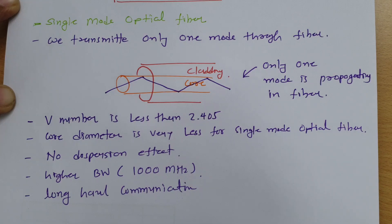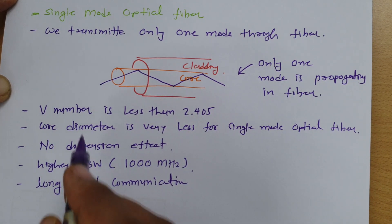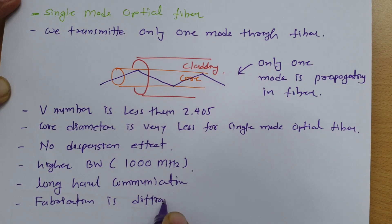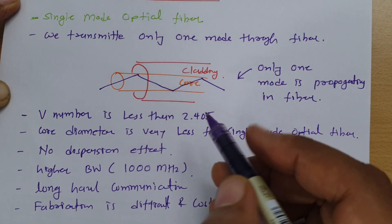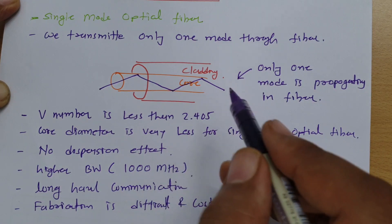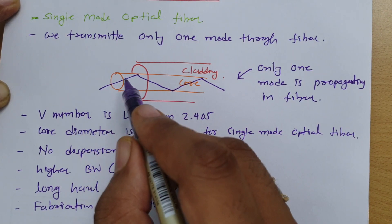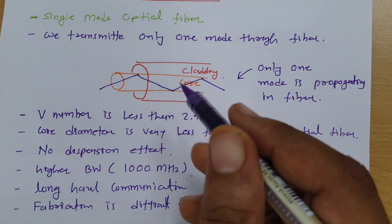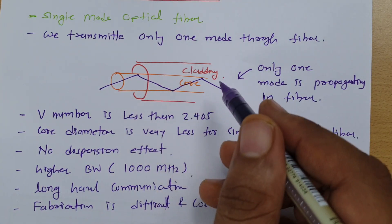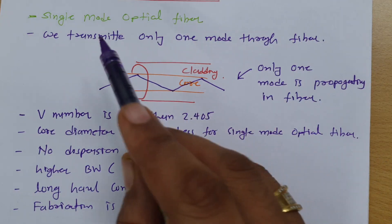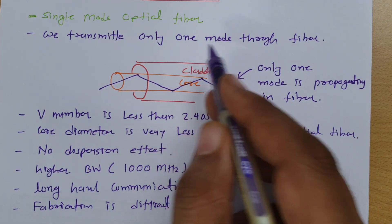When it comes to fabrication, single mode optical fiber is difficult and costly to fabricate. The reason is its core diameter is very small, so inserting a signal into the core and the overall small-scale integration makes fabrication expensive. Ultimately, single mode optical fiber transmits only one mode through the fiber.